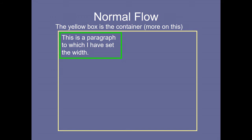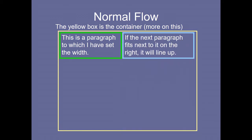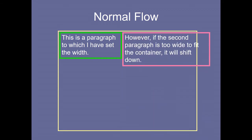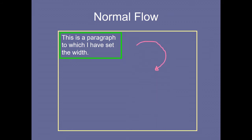In the normal flow, you see the yellow box — the yellow outside is the container. Inside this container we are putting paragraphs with a set width. One paragraph appears, and the next paragraph fits next to it on the right. It lines up after the previous paragraph finishes. If the second paragraph is too wide to fit the container, it will move down.